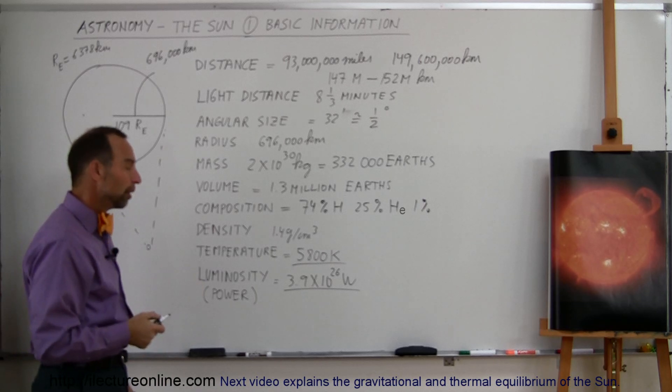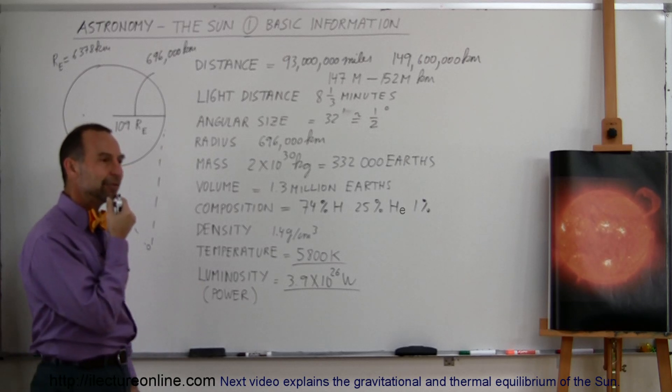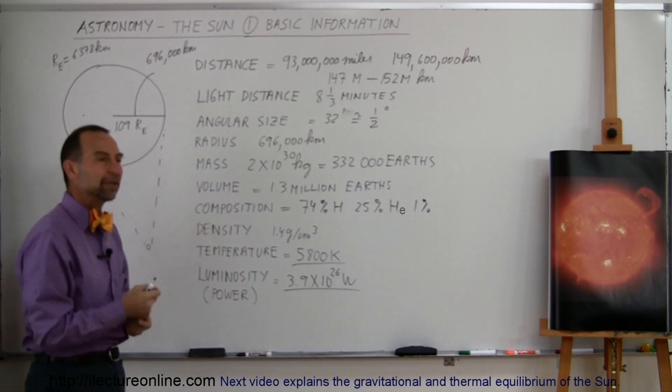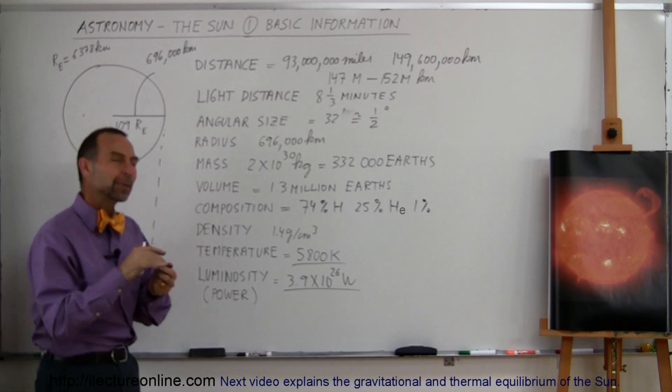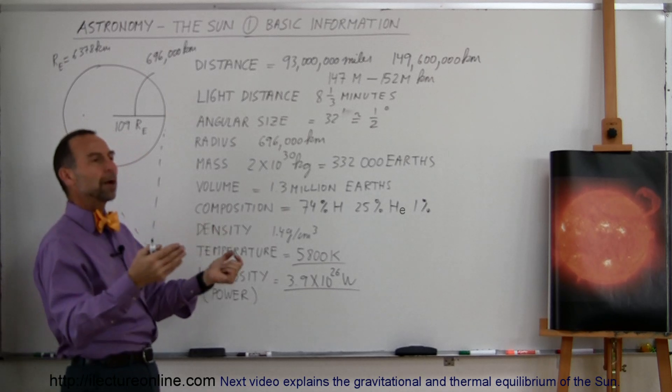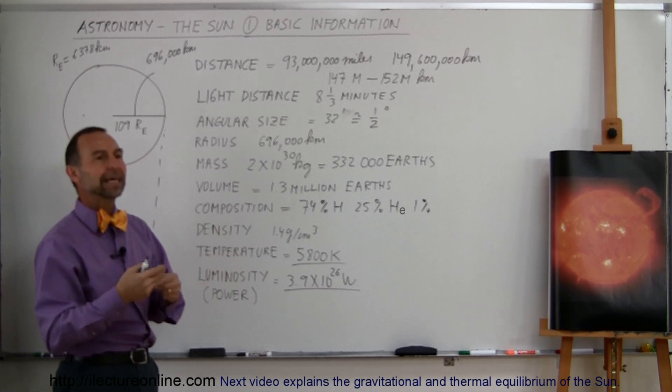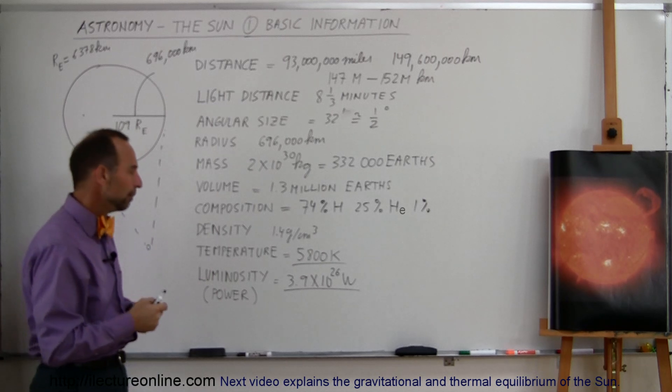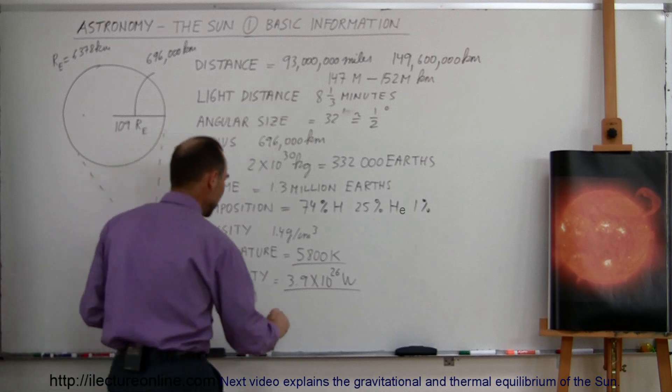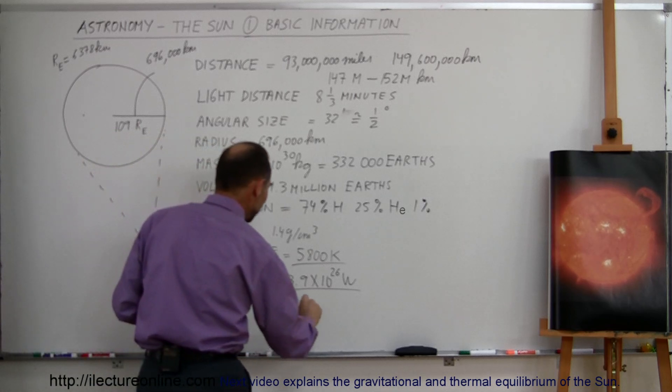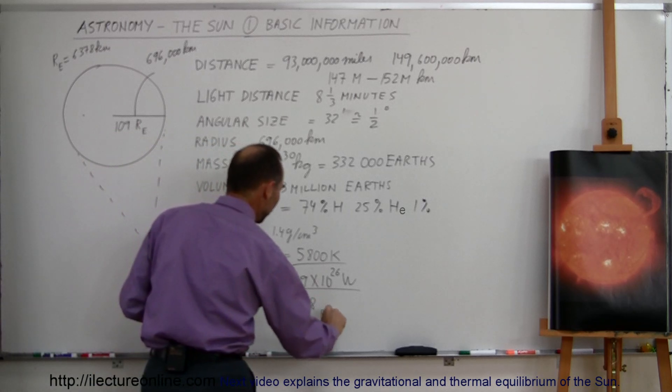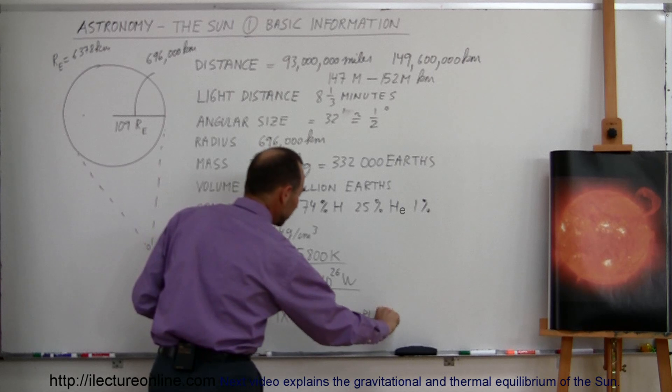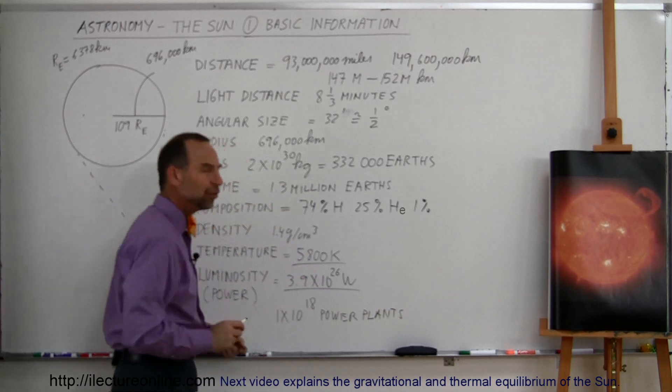Well, it's a huge number. So I thought, maybe I can figure out how many power plants you would need to generate the same amount of energy. I thought that would be a kind of nice comparison. So I did some calculations, and a typical new power plant puts out about a half a gigawatt of power, about 500 million watts of power. And so you would need 1×10^18 power plants, a typical new power plant that we build on the Earth to provide the same amount of energy as the Sun.